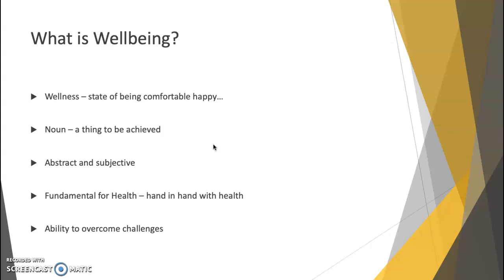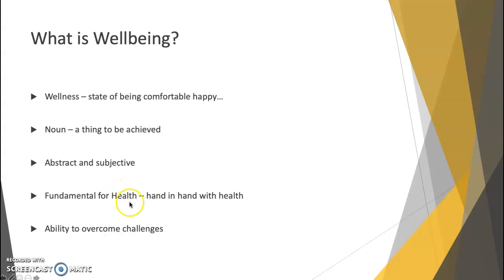As we discussed in class, it's not possible to be in a state of complete physical, mental, and social well-being. So we could add that well-being is the ability to overcome challenges — to still pursue health even in the absence of income, or in the absence of physical health sometimes. If I were to create my own definition, I'd say it's a state of being comfortable and being able to overcome challenges and still pursue health. But don't put that in your work.